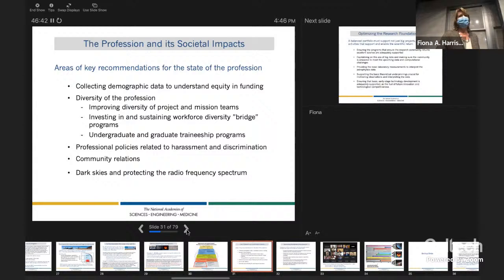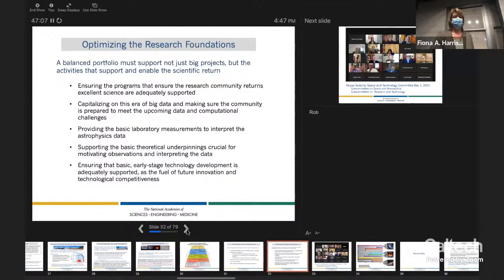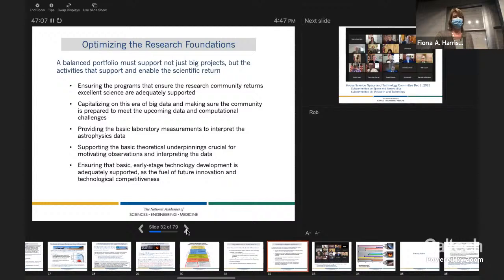This survey had for the first time a panel to look at the state of the profession and societal impacts. And chapter three of the report, I recommend reading it, distills a lot of information into a series of recommendations aimed at first collecting good demographic data, bridge programs to try to widen the pipeline of entrance into the field. And then bolstering things like grants programs at the NSF, making sure that operations for big facilities don't eat up the grants program and really supporting early stage technology development.